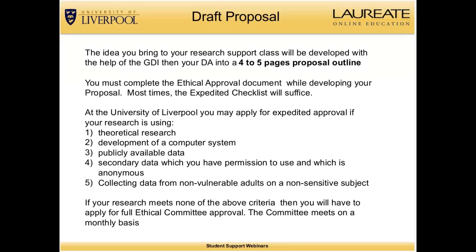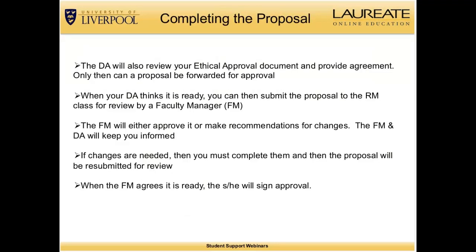The DA will also review your ethical approval document and provide agreement — only then can a proposal be forwarded for approval. When your DA thinks it is ready, you submit the proposal to the research methods class for review by the faculty manager, also known as the FM. The FM will either approve the proposal or make recommendations for changes, keeping you informed of progress. If changes are needed, you must complete them and resubmit the proposal to the research methods class for review.